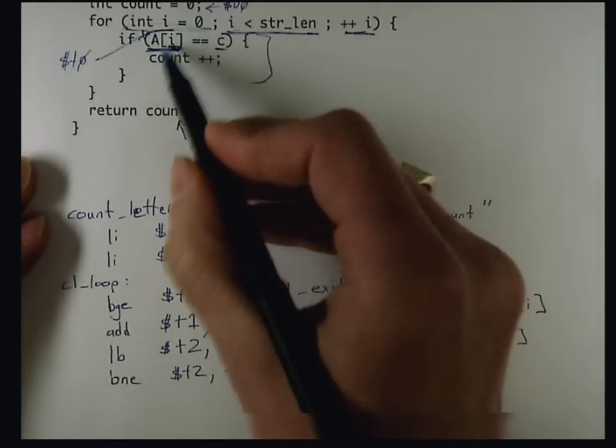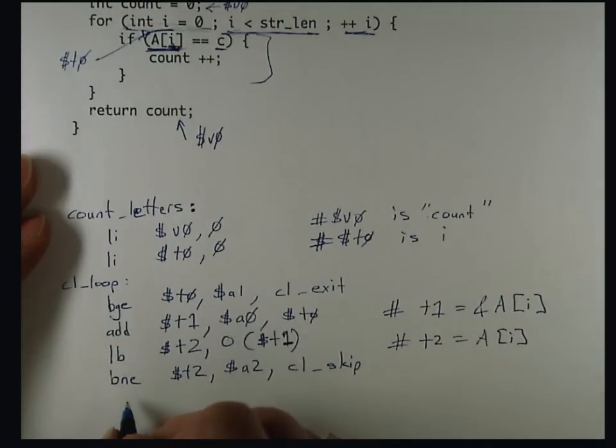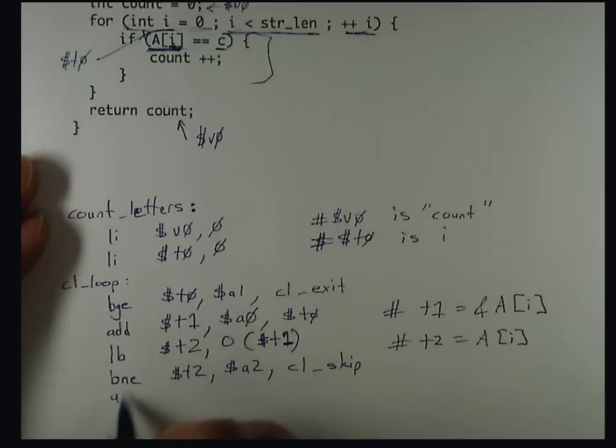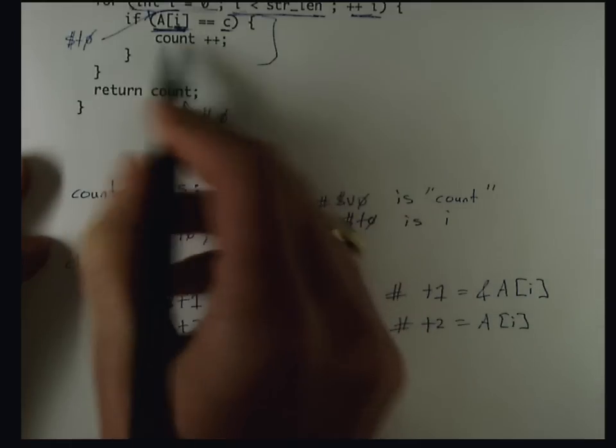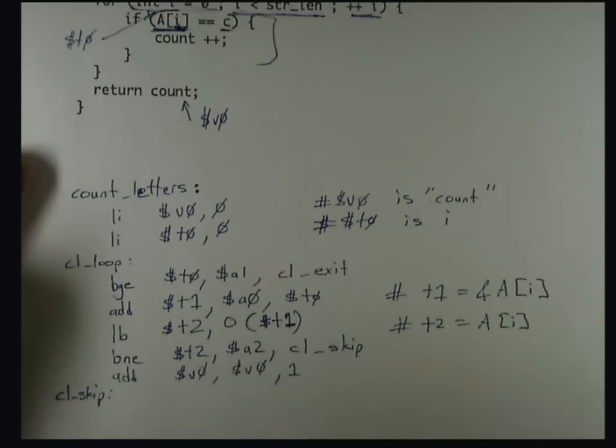So if we don't skip over this, we want to do this increment. This increment is adding 1 to count. Count is in V0, so I say add into V0 from V0 of 1. Now that's all I need to do for the inside of that loop, so I can have CL_skip, the label for CL_skip.